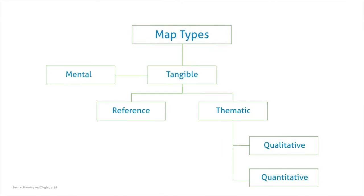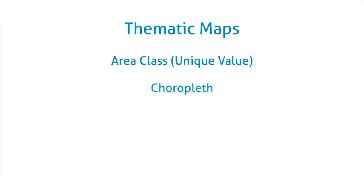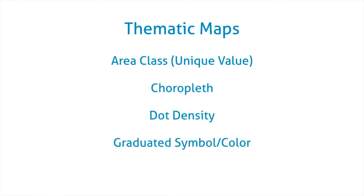ArcMap is pretty straightforward at creating both of these kinds of maps, though there are some particular things you need to be aware of. In this course, we'll cover the difference between reference maps and thematic maps, and we'll talk about qualitative versus quantitative maps and data classification. We'll also cover a variety of map types like dot density maps, choropleth maps, and proportional symbol maps.